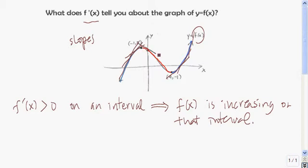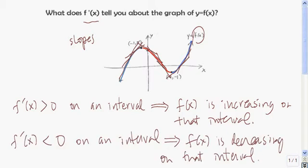Similarly, if we draw the slopes of the tangent line to the graph where f is decreasing, we see that they all have a negative slope. That means that if f prime of x is measuring the slope of the graph and the slope is negative, then f prime is negative. So if f prime is negative on an interval, the function is decreasing there. And if f prime of x is equal to zero on an interval, the slope of the graph is always zero, so f is going to be constant on that interval.